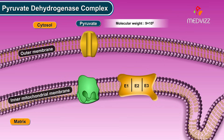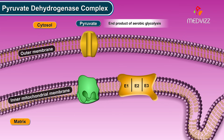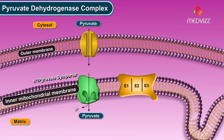The molecular weight of the PDH complex is 9 × 10⁶. Pyruvate is produced in the cytosol as the end product of aerobic glycolysis, and it enters the mitochondria by a pyruvate-proton symport present in the inner mitochondrial membrane.